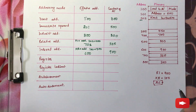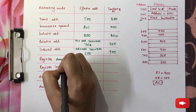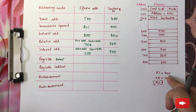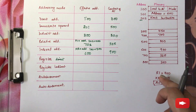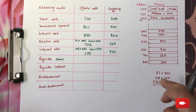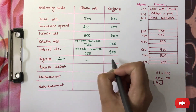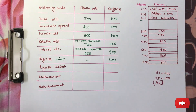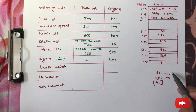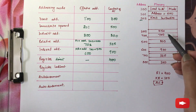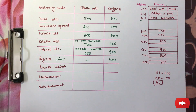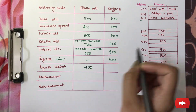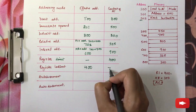Next is register mode, or register direct. This states that the value in the register is the value of the operand itself. Hence, there will be no effective address in this case and the value of the register will be your operand itself. In register indirect addressing mode, the register value will point towards another address. So in this case, the register value acts as the effective address and the value at that particular address will act as your output.